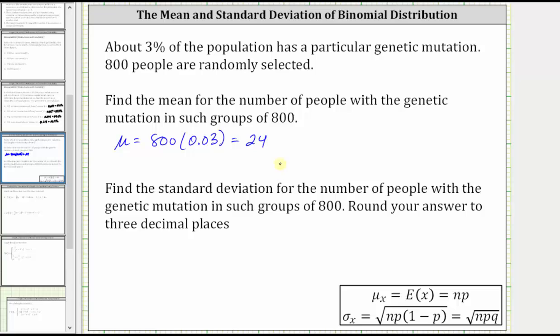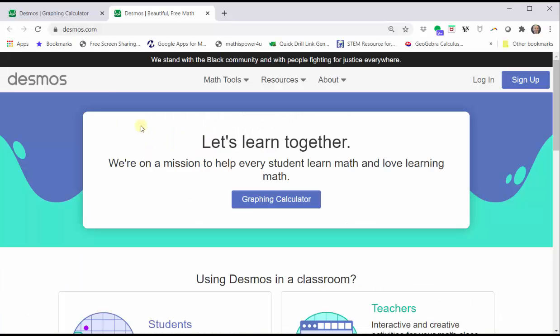This should make sense, because if 3% of the population has the genetic mutation, we would expect, on average, 3% of the 800 to have the genetic mutation, which is 24. Let's verify this two ways using desmos.com. Once on the site, click graphing calculator.